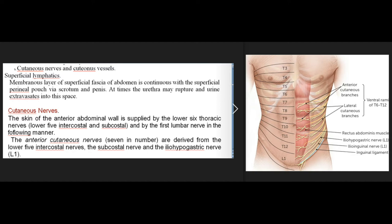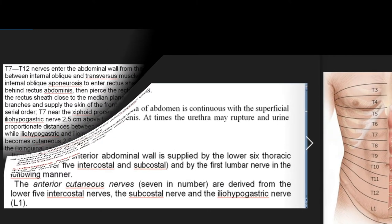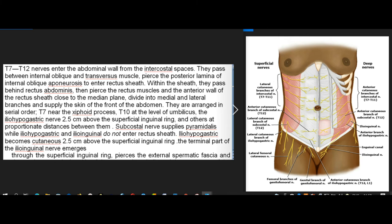Cutaneous nerves. The skin of the anterior abdominal wall is supplied by the lower 6 thoracic nerves — lower 5 intercostal and subcostal — and by the first lumbar nerve. The anterior cutaneous nerves, 7 in number, are derived from the lower 5 intercostal nerves, the subcostal nerve, and the iliohypogastric nerve (L1). T7–T12 nerves enter the abdominal wall from the intercostal spaces, pass between the internal oblique and transversus muscle, pierce the posterior lamina of internal oblique aponeurosis to enter the rectus sheath. Within the sheath they pass behind rectus abdominis, then pierce the rectus muscle and the anterior wall of the rectus sheath close to the median plane, dividing into medial and lateral branches to supply the skin of the front of the abdomen.